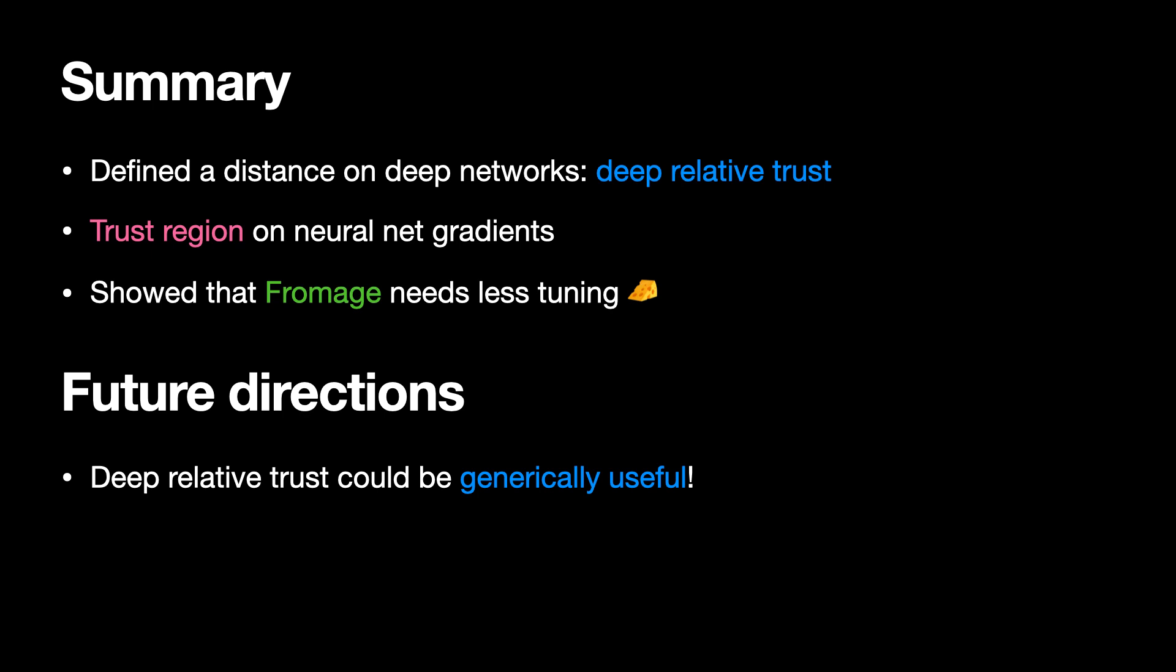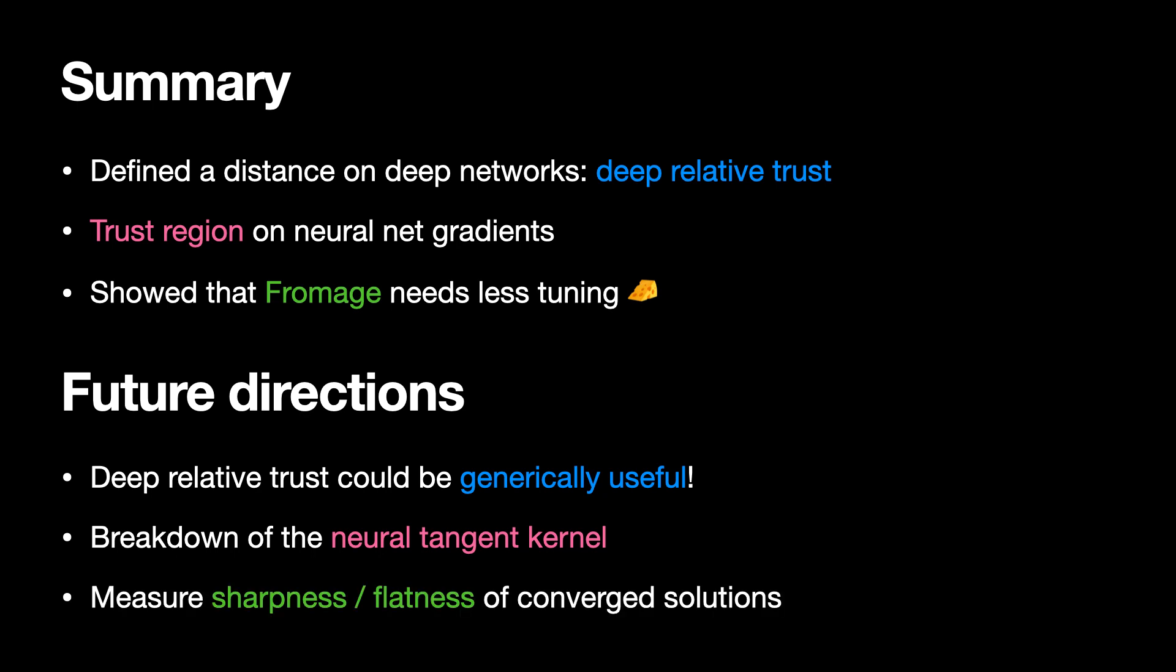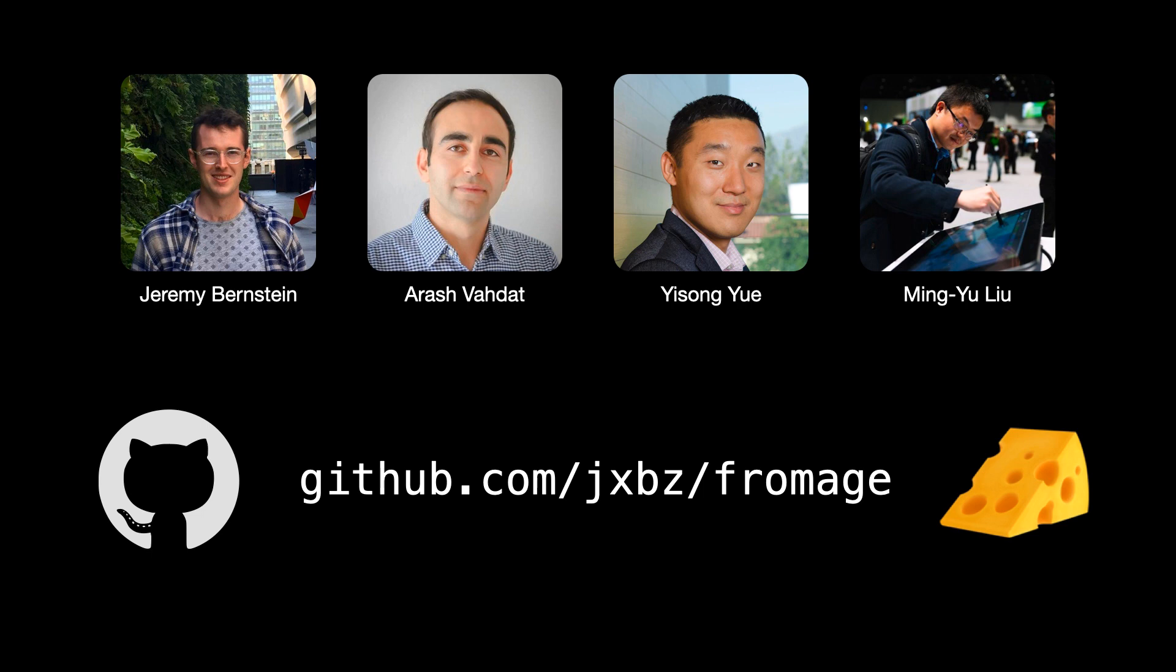Deep relative trust could be generically useful. It could be used to bound the breakdown of the neural tangent kernel and could help measure the sharpness and flatness of converged solutions. Thank you.